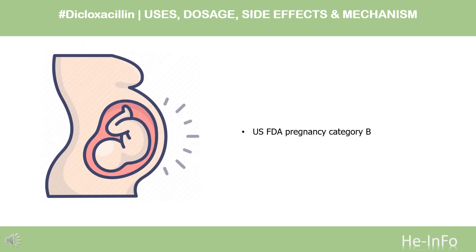Safety Advice. Dicloxacillin has been assigned to pregnancy Category B by the FDA. Animal studies have failed to reveal evidence of fetal harm, and there is no controlled data in human pregnancies.